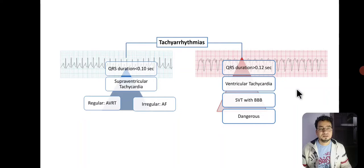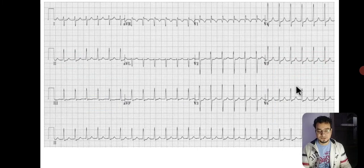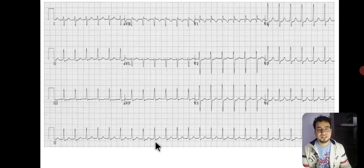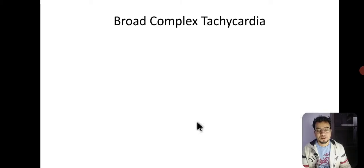Broad complex tachycardias are more dangerous than narrow complex tachycardias. Now look at this ECG — the rhythm is regular, heart rate is 1500 divided by 10 small boxes, giving a rate of 150. P wave is not clearly visible before the QRS complex in lead 2, so it is probably embedded in the QRS. The QRS duration is just one small box, that is 0.04 second, so the diagnosis is narrow complex tachycardia.